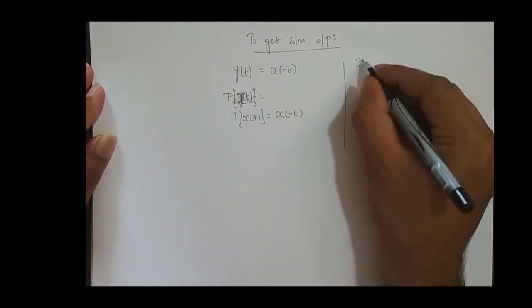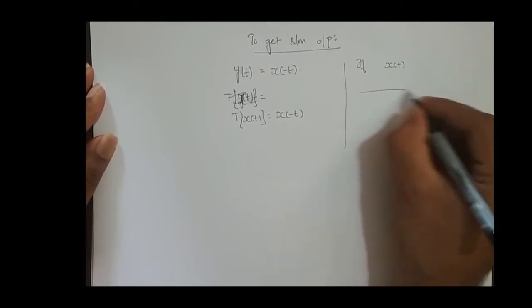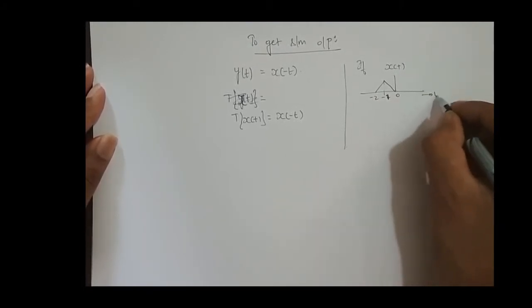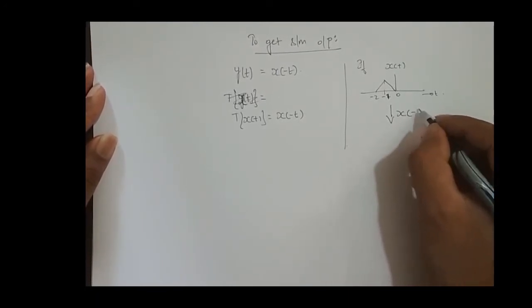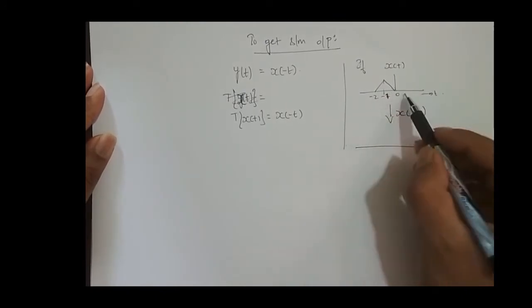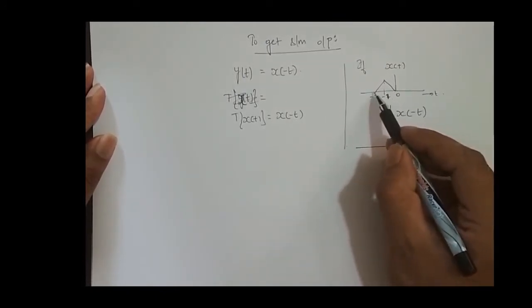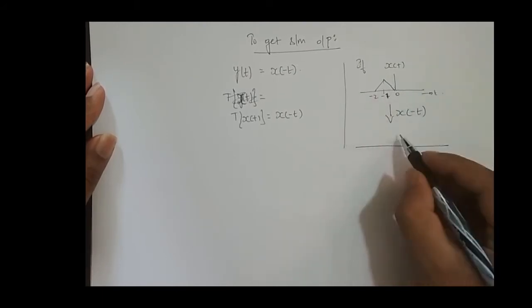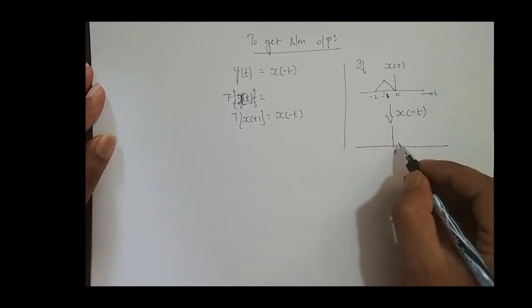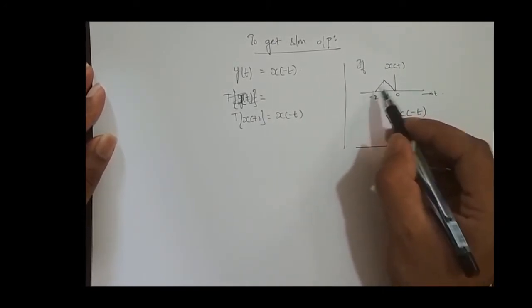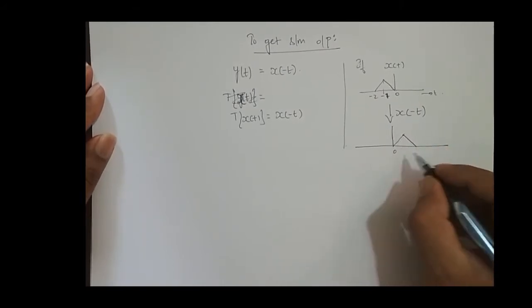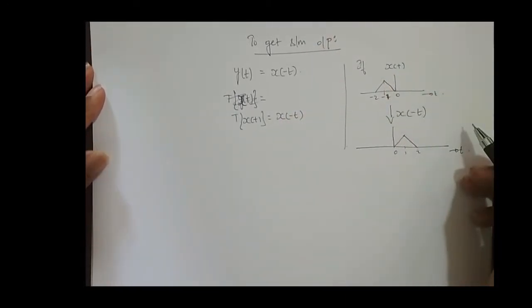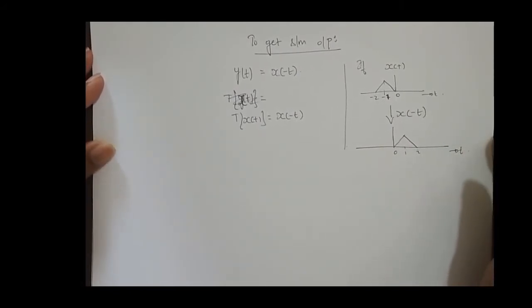For example, if x of t is some signal with values at minus 2, minus 1, minus 2, and 0, then x of minus t is its time-reversed version — all the amplitude in the positive side of t goes to the negative side, and all the amplitude in the negative side of t goes to the positive side. Since there is no amplitude in the positive side of t, the negative side amplitude is 0, and the negative side amplitude goes to the positive side, giving values at 1 and 2. It is nothing but the flipped version of the input signal x of t with respect to the time axis t equal to 0.